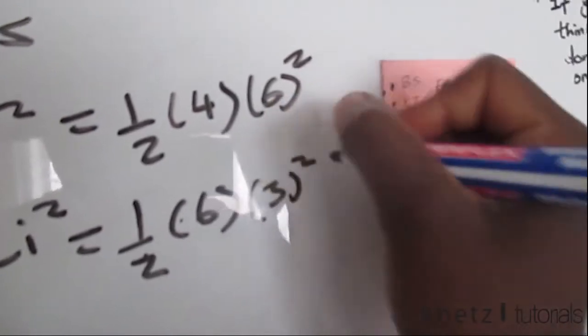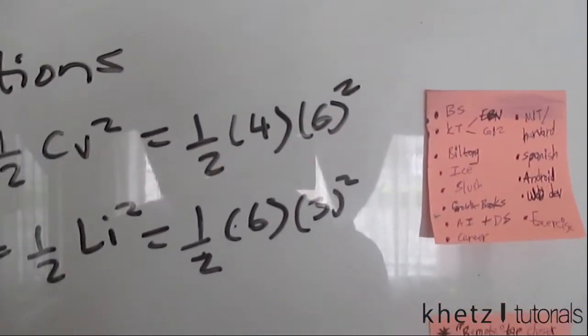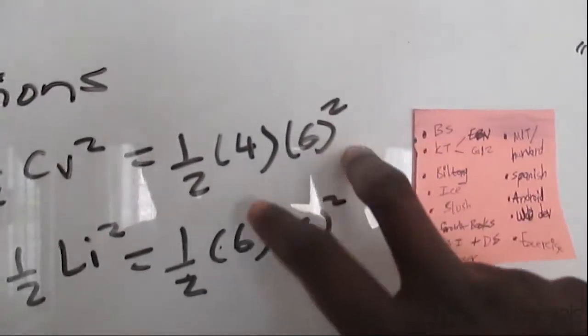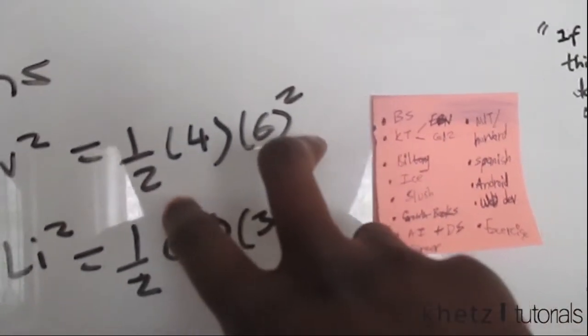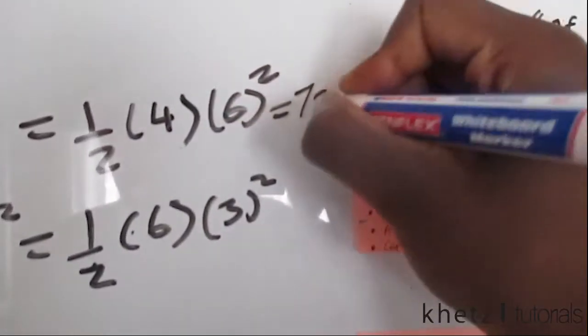So just punching this into a calculator, or simply doing it in your head if you want to, this is 36 divided by 2 is 18, and then 18 multiplied by 4 is 72. So 72 joules.